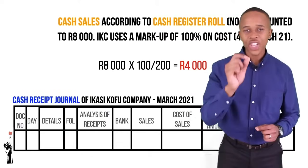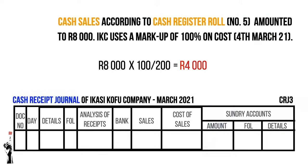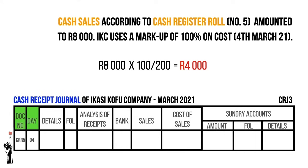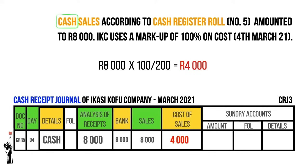Let's fill in the cash receipts journal. First record the document number and the date. The details will be 'cash' because we received the sales in cash. The 8,000 Rand — the money received by the business — should be recorded in the analysis of receipts and the bank column. We then record the 8,000 Rand in the sales column and the 4,000 Rand calculated cost price in the cost of sales column.